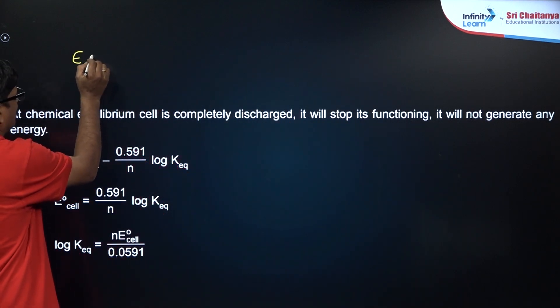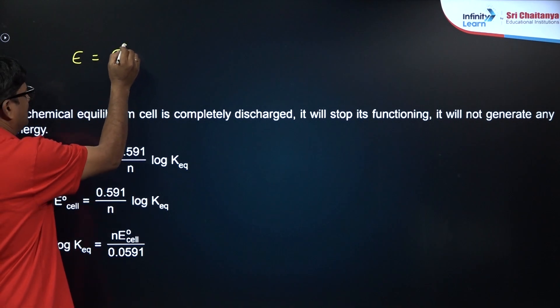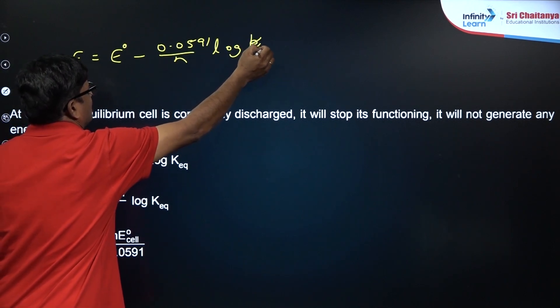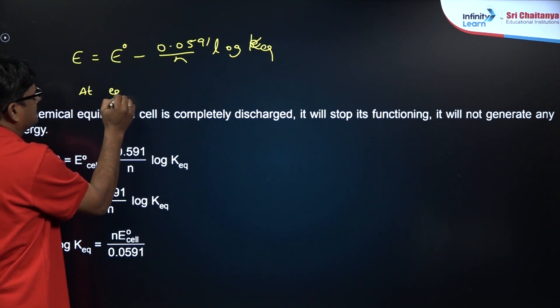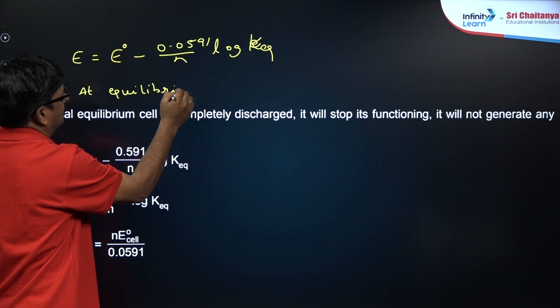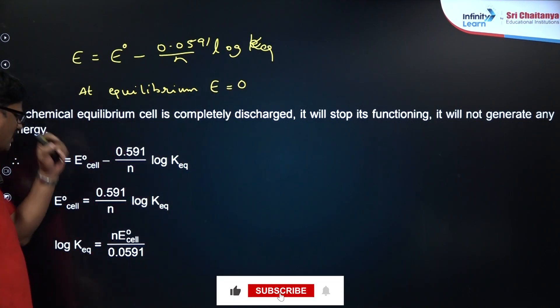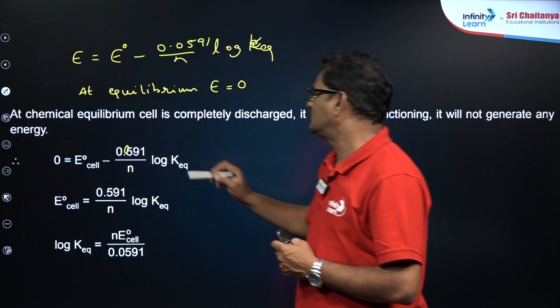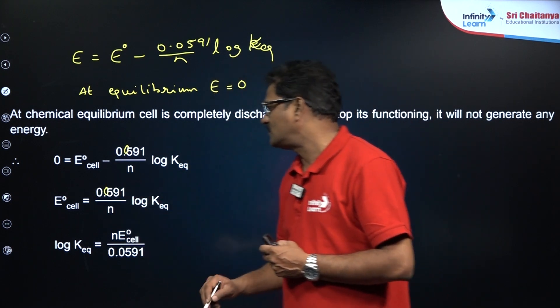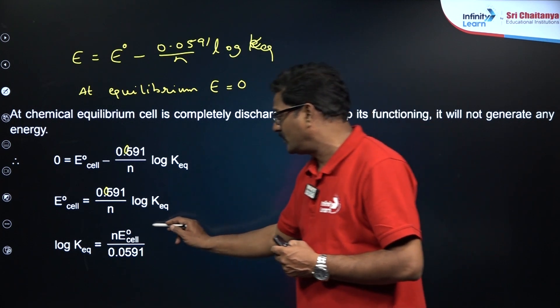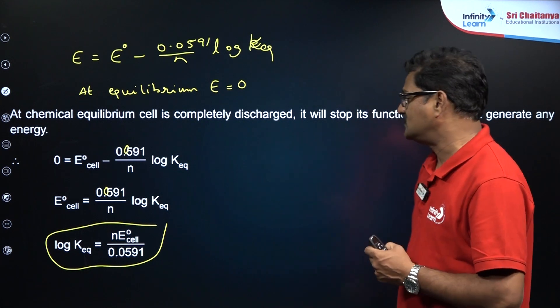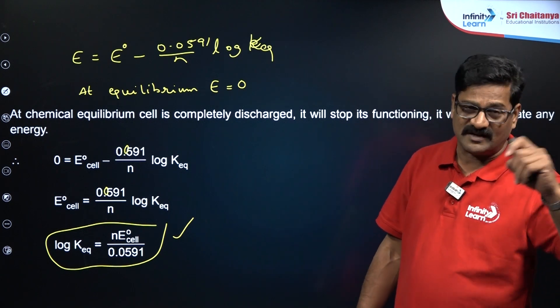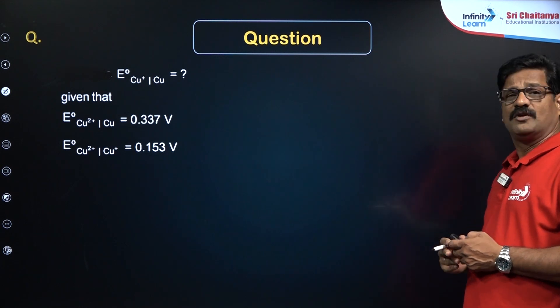According to Nernst equation, E equals E naught cell minus 0.0591 by n log K equilibrium. At equilibrium, EMF of the cell is equal to zero. Therefore, zero equals E naught minus 0.0591 by n log K equilibrium. E naught cell equals 0.0591 by n log K equilibrium. So log K equilibrium equals nE naught cell by 0.0591. By using this formula, you can directly calculate the equilibrium constant and also Gibbs free energy change from here, and based on this you will be asked a question.